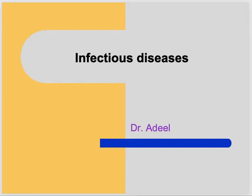Good morning everyone. Today we are going to discuss infectious diseases and their importance. Infections are the most common cause of acute illnesses in children worldwide. There are many types - respiratory infections, diarrhea, fatal infections like meningitis and encephalitis, malaria, and rashes in children like chickenpox and measles.